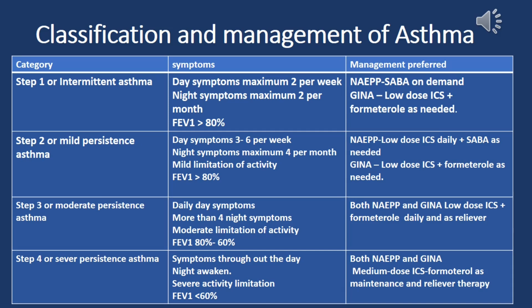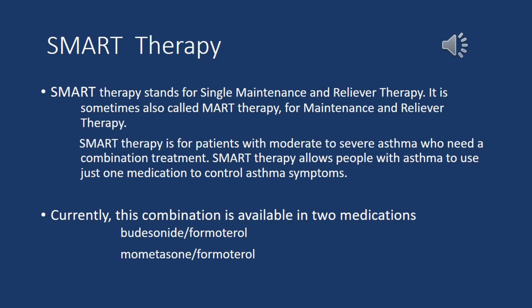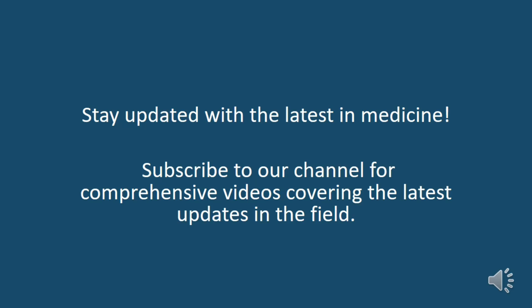In summary, GINA recommends low-dose ICS plus formoterol as needed for both intermittent and mild persistent asthma. Both guidelines recommend low-dose ICS plus formoterol as maintenance and reliever therapy for moderate persistent asthma, and medium-dose ICS plus formoterol for severe persistent asthma as first-line treatment. SMART therapy — single maintenance and reliever therapy, also called MART therapy — is for patients with moderate to severe asthma who need a combination of treatments, allowing use of just one medication. Currently available as budesonide-formoterol and mometasone-formoterol.